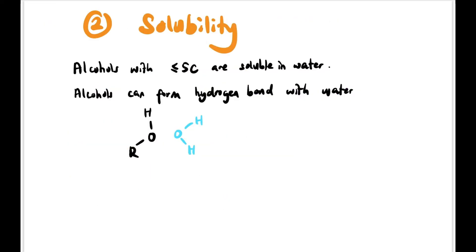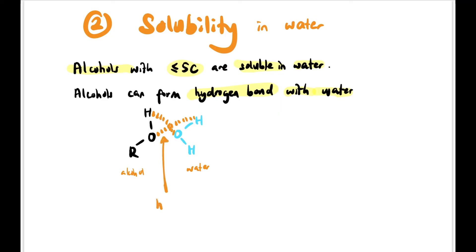Now let's discuss solubility of alcohol in water. In general, alcohols with five or fewer carbons are soluble in water because they can easily form hydrogen bonds with water. The OH group of alcohol forms hydrogen bonds with water: oxygen of H₂O bonds with H from the alcohol's OH group, and oxygen from the alcohol's OH group bonds with H from water.